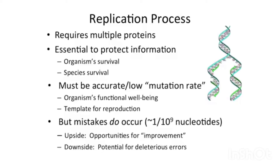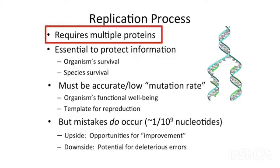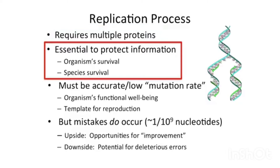This process is complex, so let's step through it. First, it requires multiple proteins. There are lots of steps and important groups and families of proteins responsible for the replication process. The process itself is important for survival — as an organism grows and cells divide, they replicate their DNA.